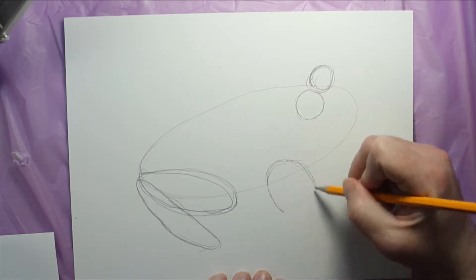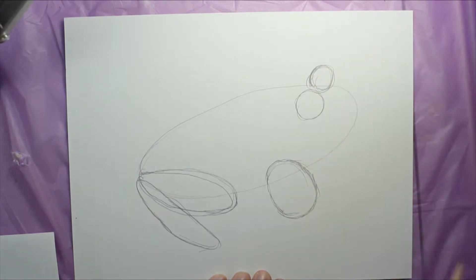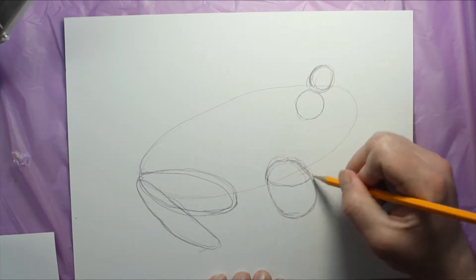Then make a couple of other ovals for the legs. I did a circle for the front leg and then I'll break that down later.